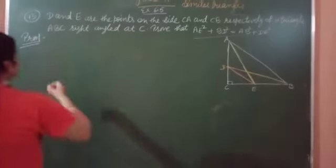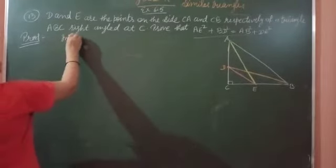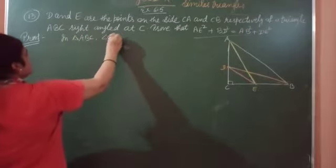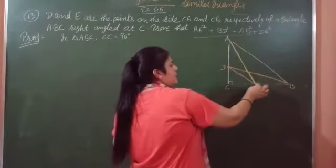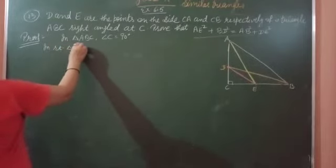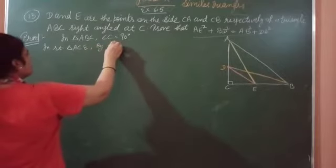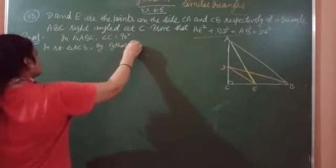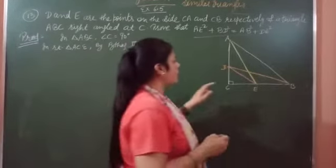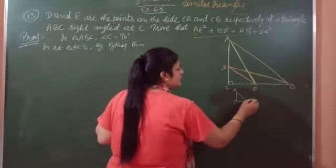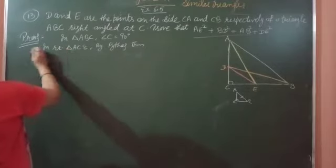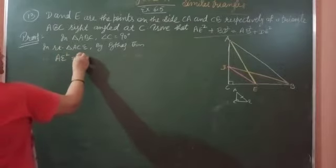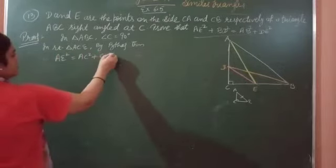So let's start. We have given that in triangle ABC, angle C is 90 degrees. First thing we have to take AE square. So AE square is coming from triangle ACE. In right triangle ACE by Pythagoras theorem, hypotenuse square is equal to sum of squares of the other two sides. So C is opposite to AE. AE square is equal to AC square plus CE square. This is our first equation.